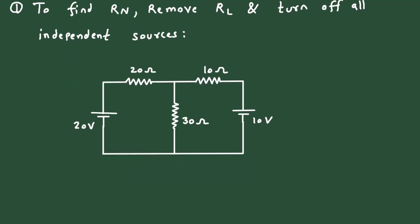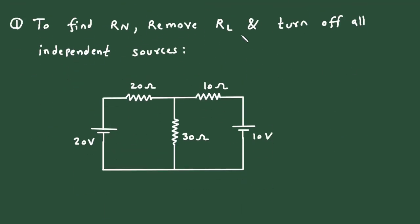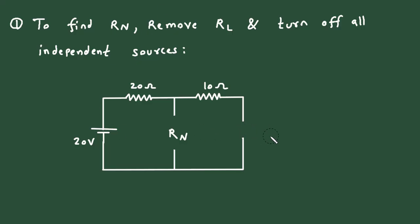To find Rn, remove Rl — so from here we remove Rl and now this will be our Rn terminals. We also have to turn off all independent sources. Here we can see there is a voltage source, and when we turn off a voltage source it becomes a short circuit. So here this will be a short circuit, and also this will be a short circuit.